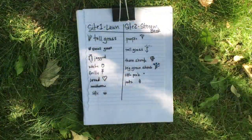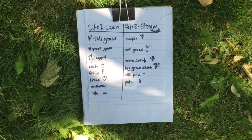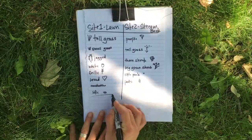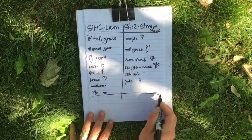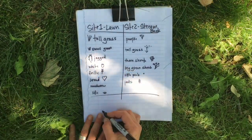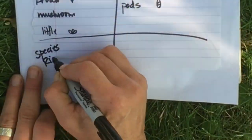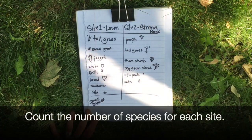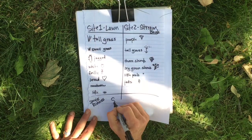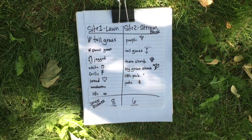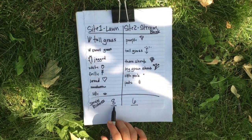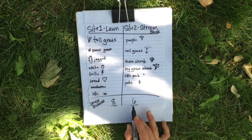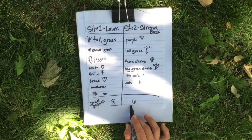Once you've taken three samples from each site, draw a line under your last species and write 'species richness' off to the side. Count the total number of species you recorded for each site. For my Site 1, my species richness was 8. For my Site 2, the stream bank, my species richness was 6.